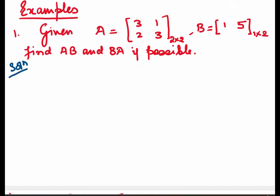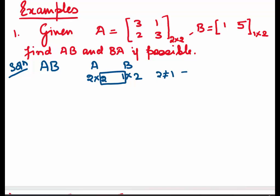Let's come to some examples and see how matrix multiplication is done. In the first example, we are given two matrices A and B. A is of order 2 by 2 and B is of order 1 by 2, and we are asked to find products AB and BA if possible. We will first check for AB: write the order of A first, which is 2 by 2, then write the order of B, which is 1 by 2. Check the inside numbers — 2 is not equal to 1, which implies AB cannot be found.